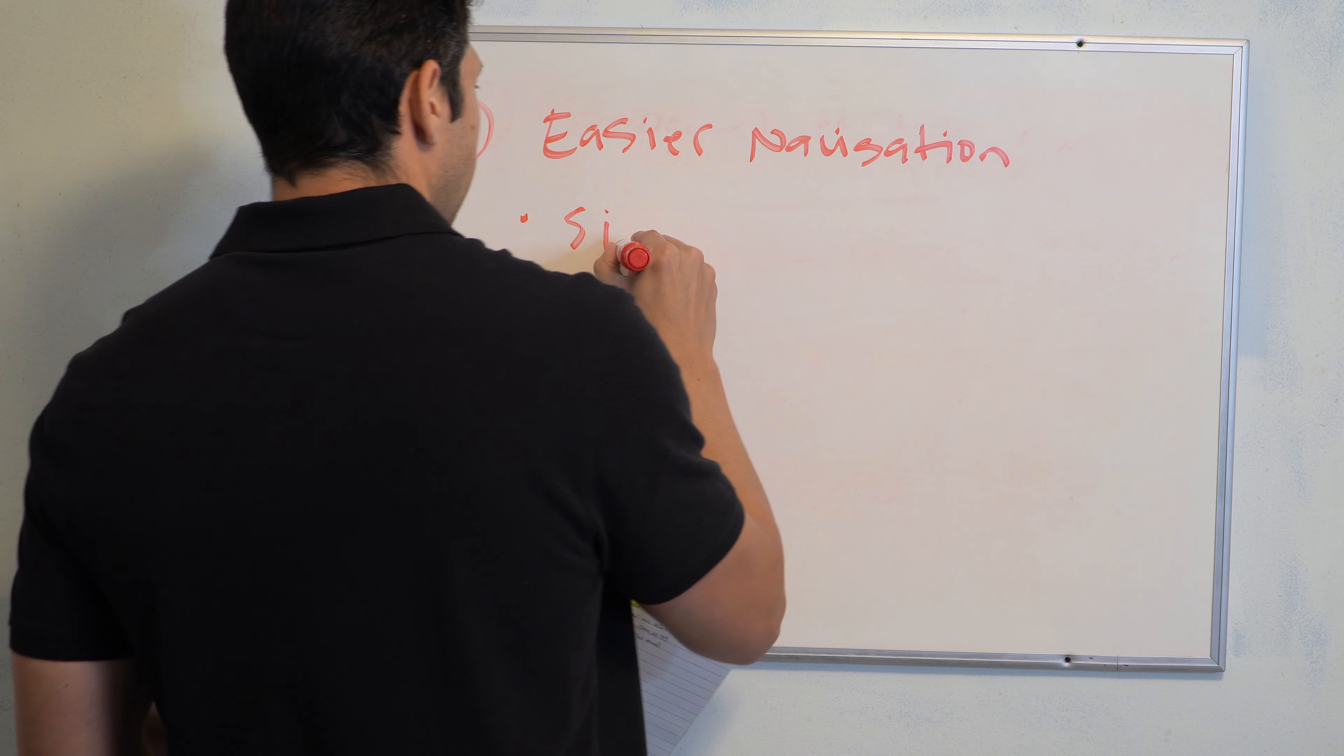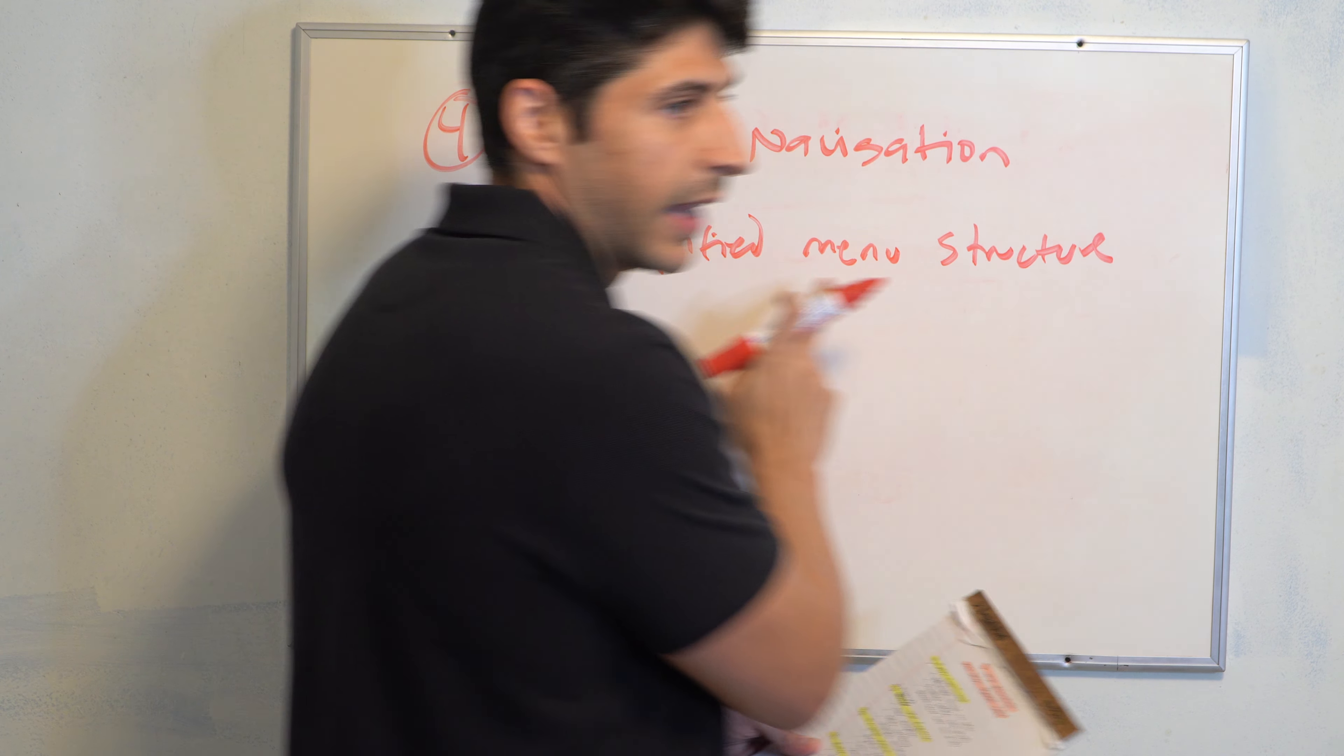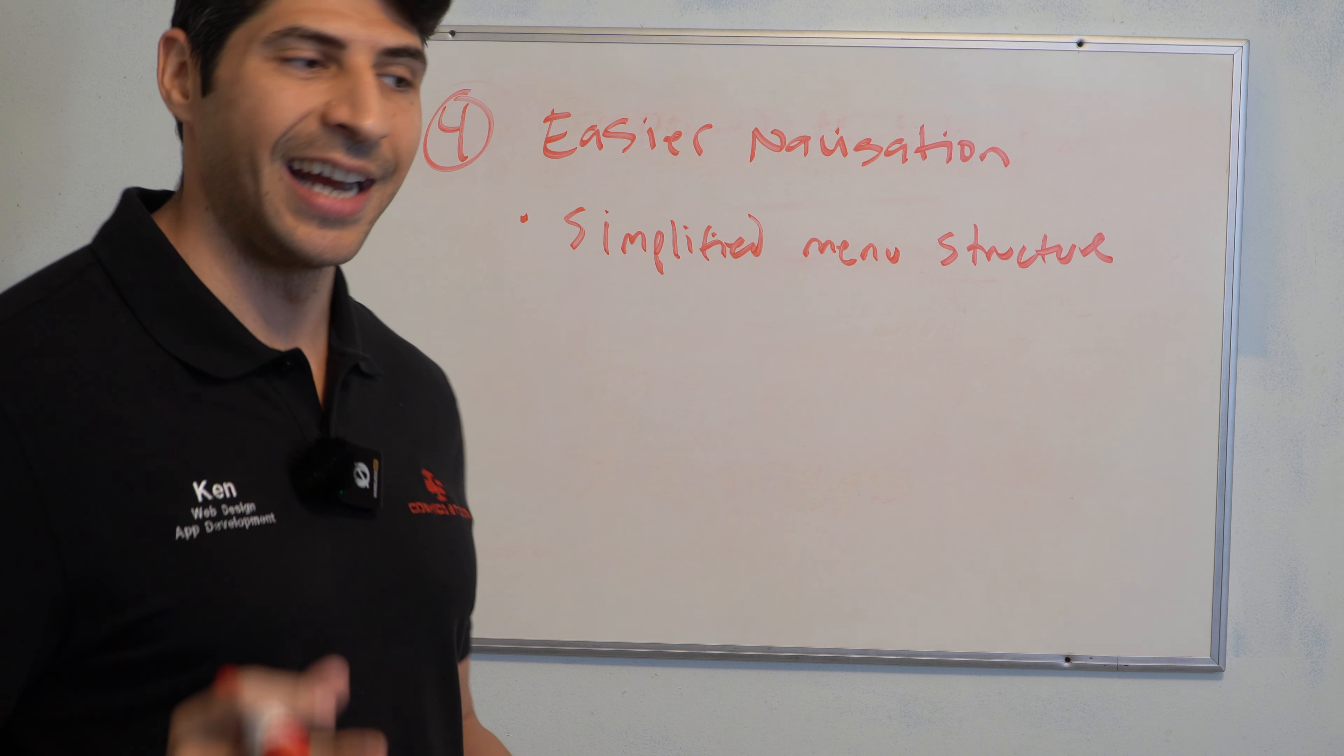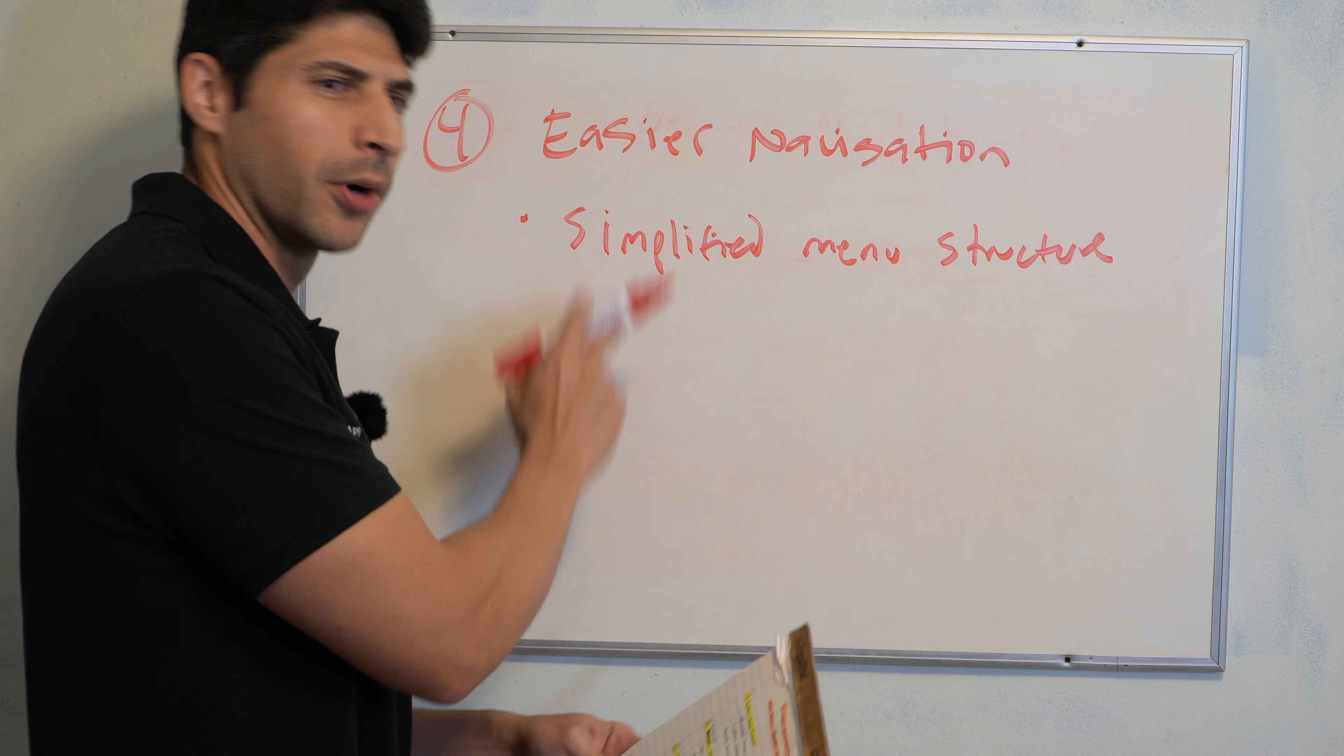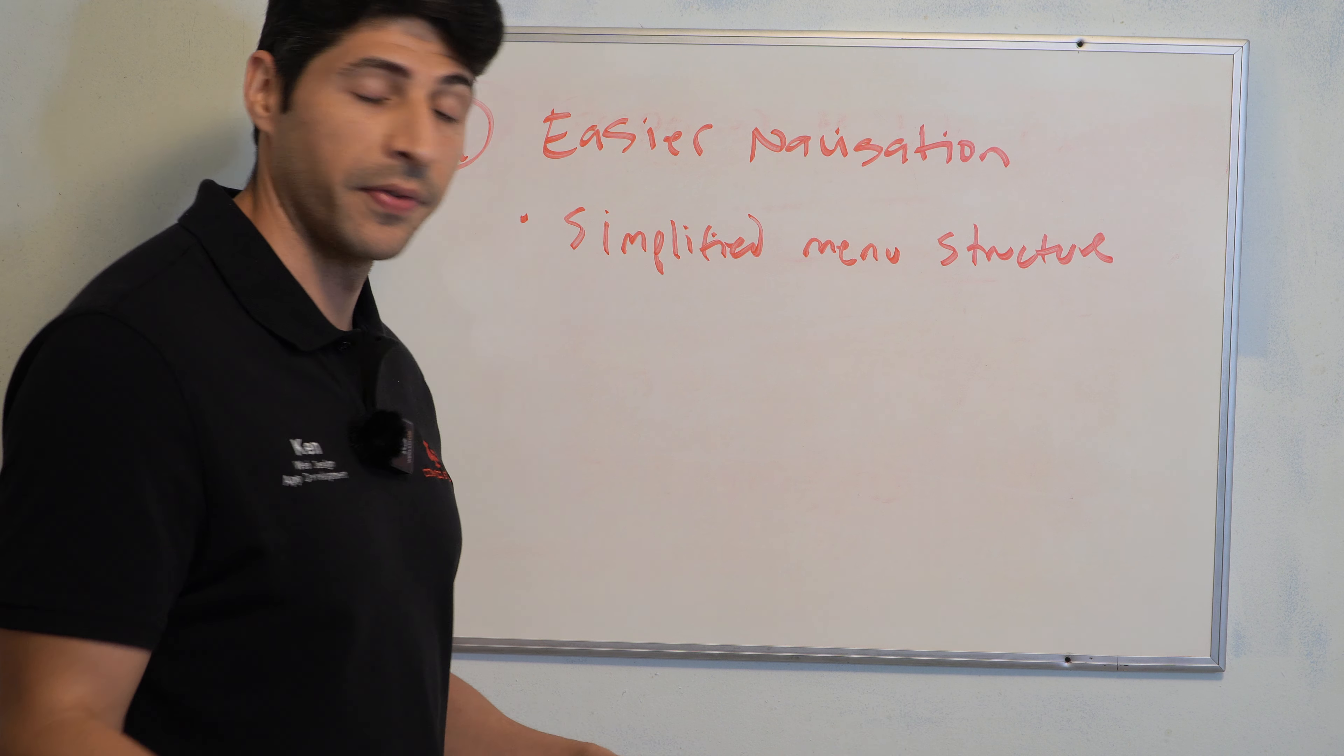So this brings simplified menu structure. Not having so many links in your menu and even in the drop downs, keep it very concise, simple, apply the 80-20 rule. Again, 80-20 is one of the best principles I've learned in my life. And applying that to even sales and to marketing and to your website goes a long way. Reducing to the most important and most efficient buttons or pages or services that you provide.